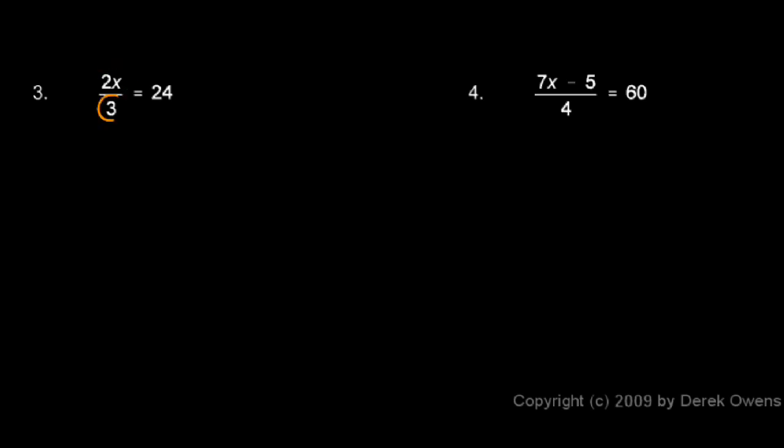Right now we have x multiplied by 2 and divided by 3. The easiest way to do this is in one step. I've got this x here, think of it as being multiplied by 2 thirds. I can get rid of the 2 thirds if I multiply this equation by 3 halves.